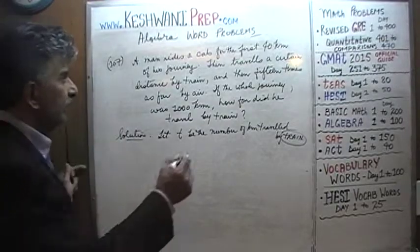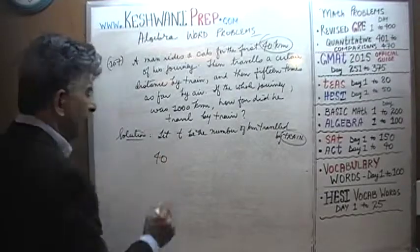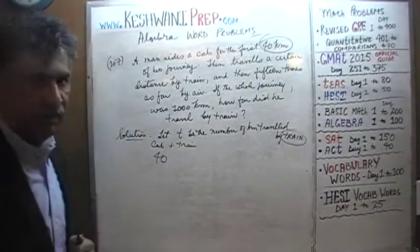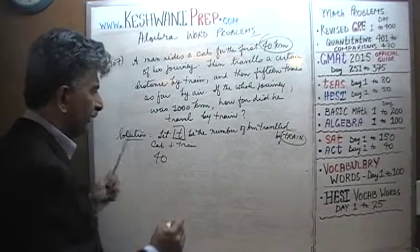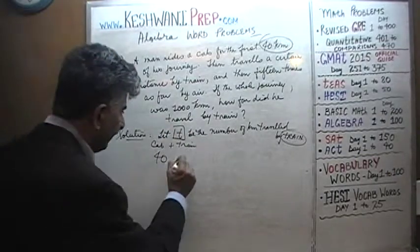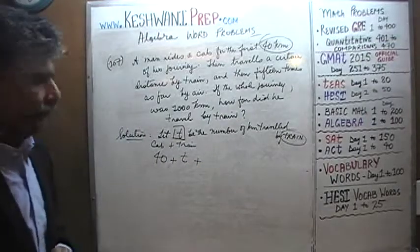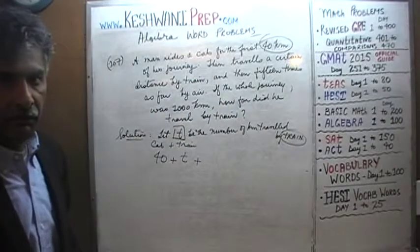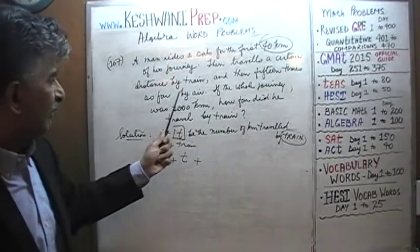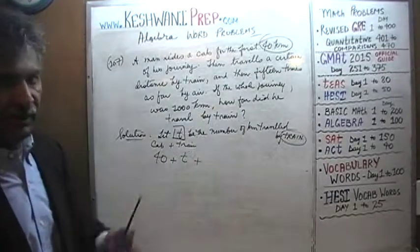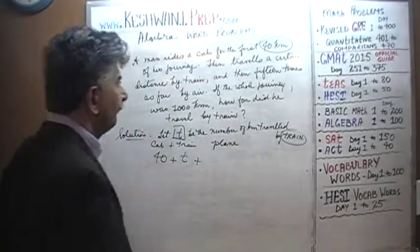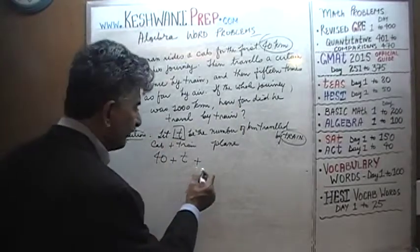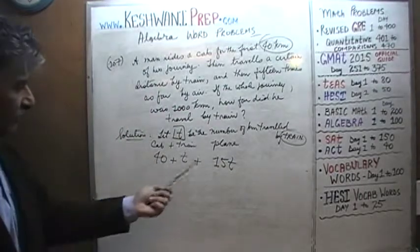What do we know? He traveled the first 40 kilometers by cab. Then he took a train — let T represent the number of kilometers traveled by train. Then he arrived at the airport and took a plane, traveling 15 times the distance he traveled by train — so 15 times T.